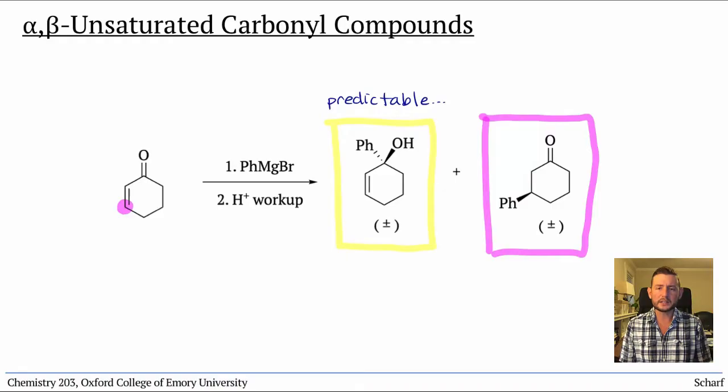Why do we see two products? Because conjugated systems have delocalized frontier molecular orbitals, and therefore can often react at multiple locations.